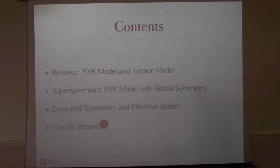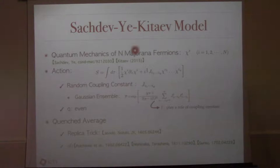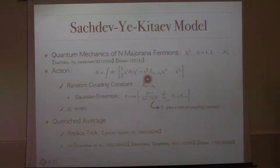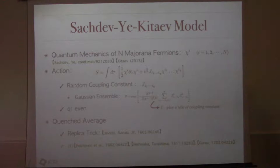The SYK model has N Majorana fermions where i goes from 1 to N. There is a kinetic term and a random interaction. The random coupling constant is averaged over a Gaussian ensemble. You already heard this in the last lecture.